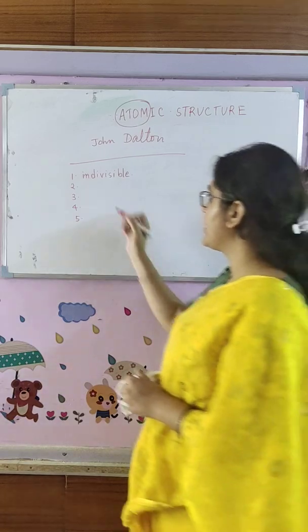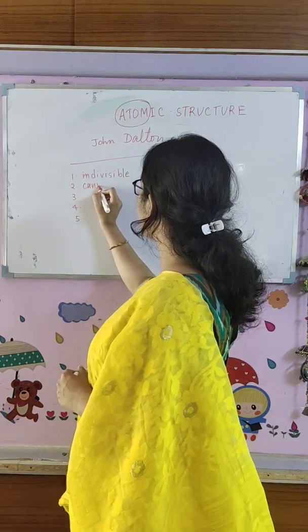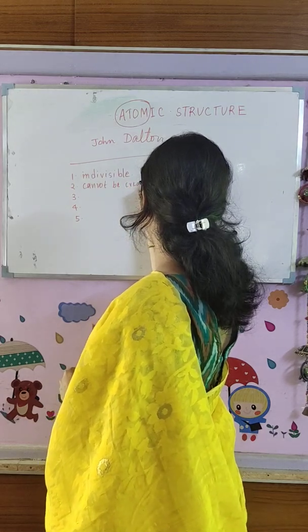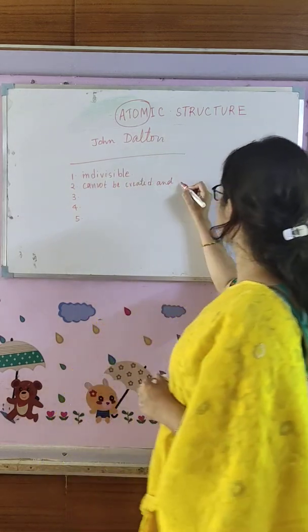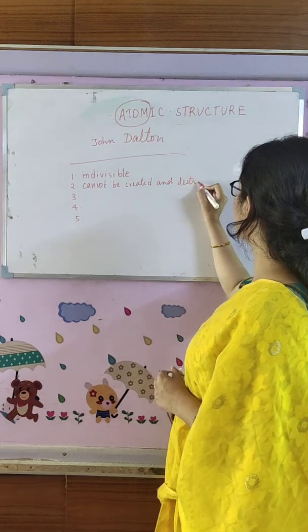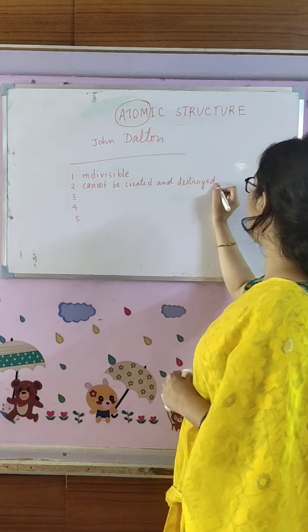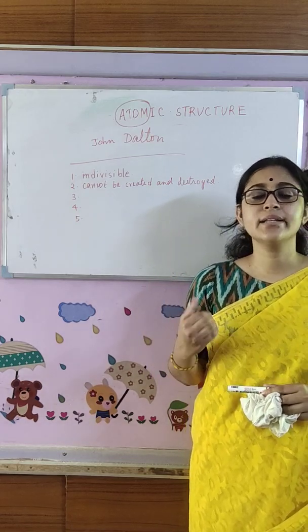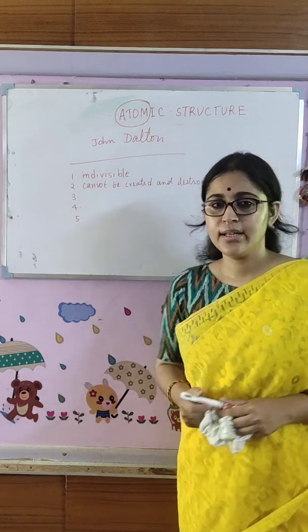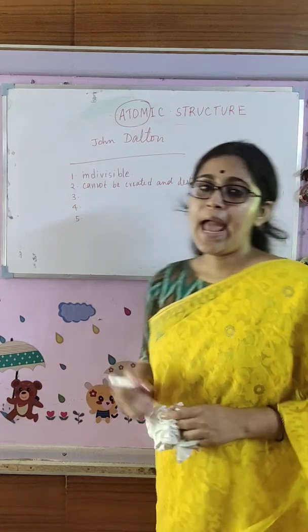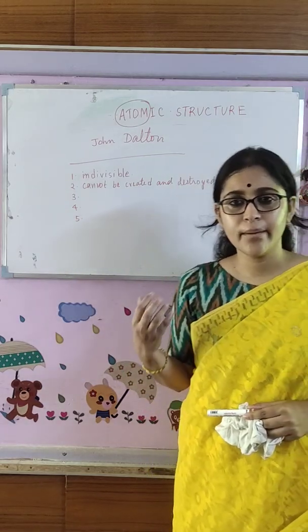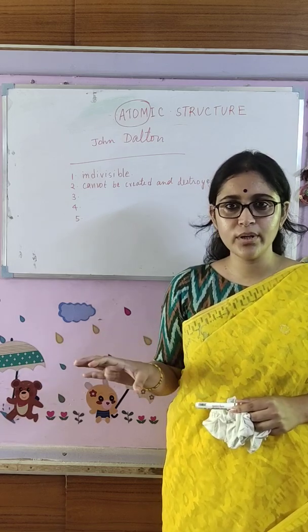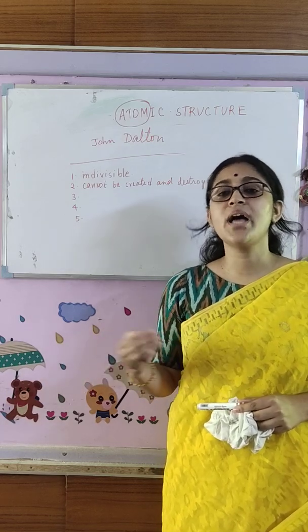Number two, he told that atom cannot be created and destroyed. So according to John Dalton, we human beings cannot create an atom, cannot destroy an atom. Atom can neither be created nor be destroyed. Number three, he told that the atom of one particular matter shows all the properties of that matter and it is different from the atoms of other compounds.